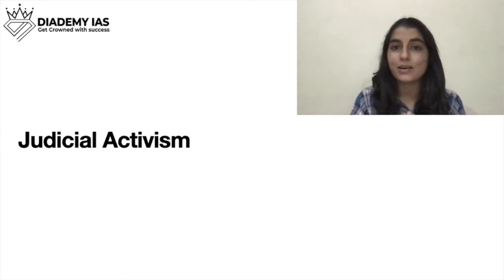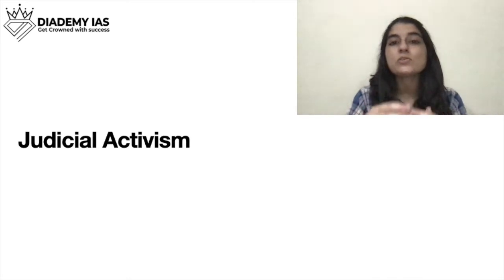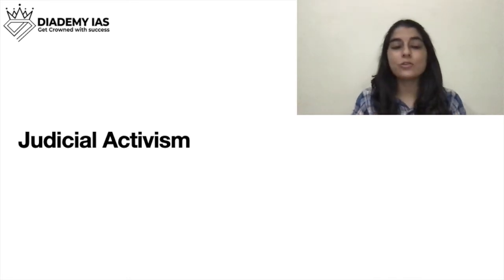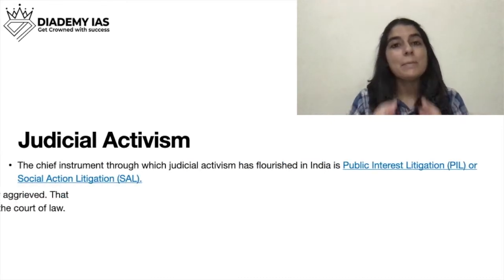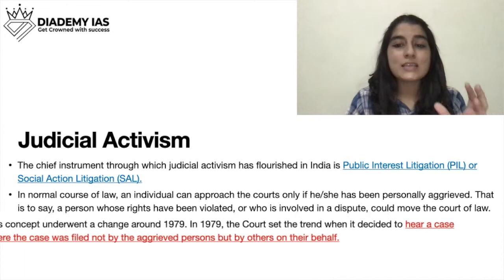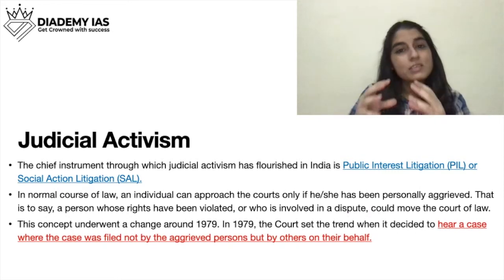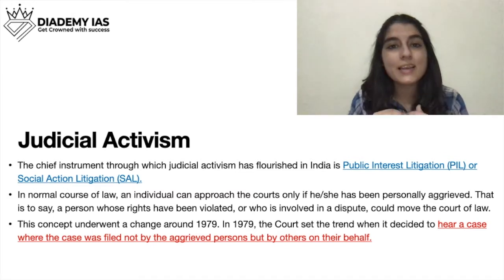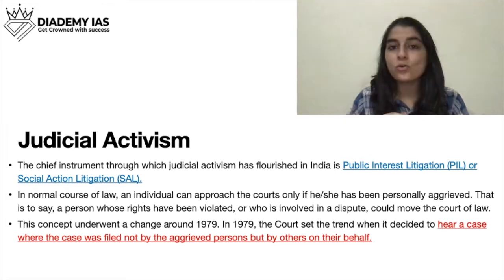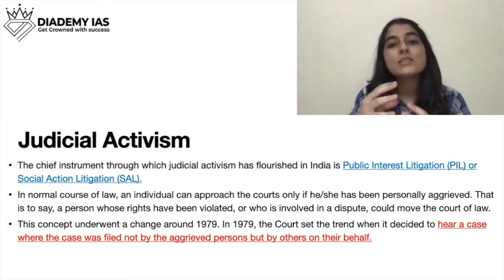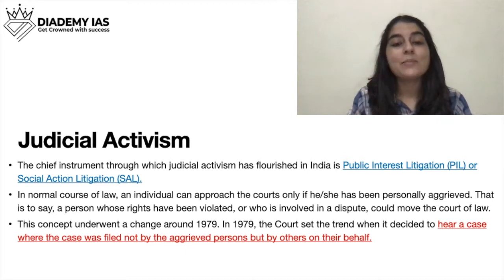Originally, jo aggrieved person hota tha, jo victim party hoti thi, only that party used to approach the Supreme Court. But in around the 1970s and 80s, this concept underwent a change. Kuch aise log jo khud aggrieved nahi thay, jo khud victim nahi thay, they still approached the court on behalf of others. So this was termed as public interest litigation.